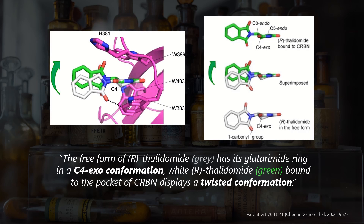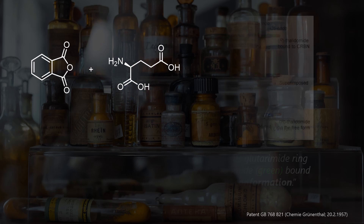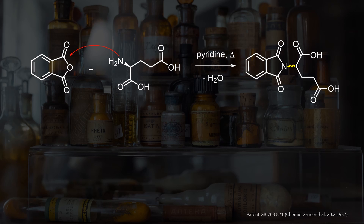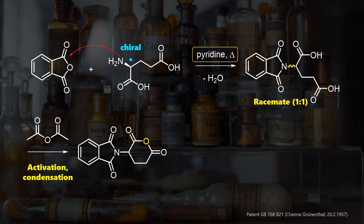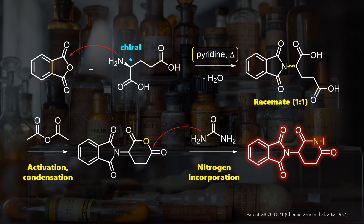How can the almost identical R-enantiomer be safe? Although it has the same molecular contacts with cereblon, its affinity is much lower due to an energetically unfavorable conformation it needs to adopt upon binding. This twisting occurs because the glutarimide ring wants to minimize steric clashing with the binding pocket, particularly tryptophan 383. Looking at its synthesis, it becomes obvious why original thalidomide is a racemic mixture. The Grünenthal route starts with a condensation of L-glutamic acid and phthalic anhydride; basic conditions and high temperature result in a racemic product due to isomerization.